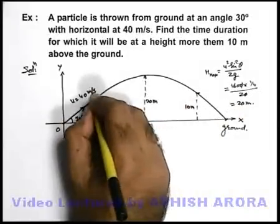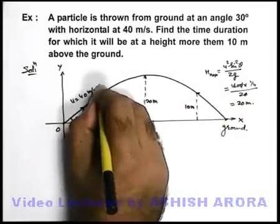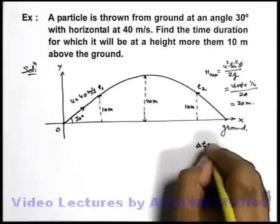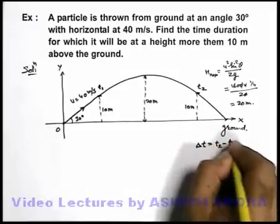Say at this position the particle was at time t1 and at this position it was at time t2. Then we are required to find the time delta t which is t2 minus t1.